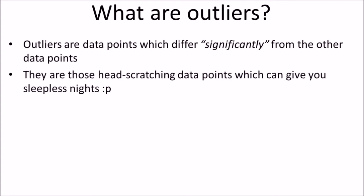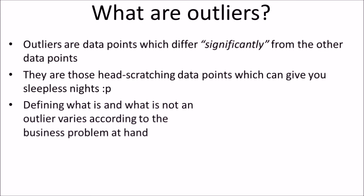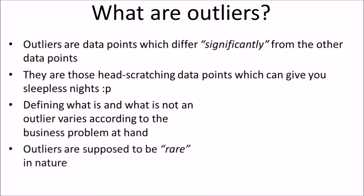They are also those head-scratching data points which can give you sleepless nights if not handled properly. Defining what is and what is not an outlier varies according to the business problem at hand. Sometimes even two people might disagree on whether a certain data point is an outlier or not. It is a rather subjective issue. Also, outliers are supposed to be rare in nature. So if the number of outliers in your data is not rare, then there is something going on with the data and we need to inspect it properly.